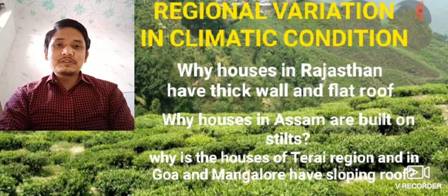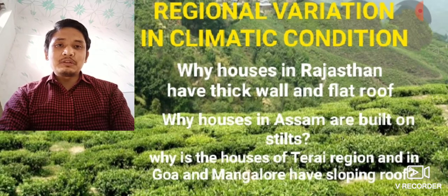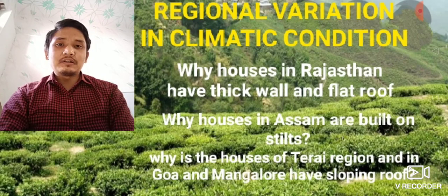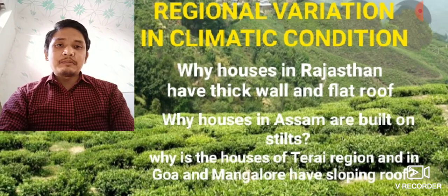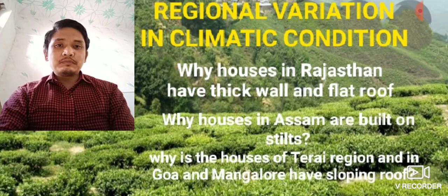This is also regional variation in climatic conditions. To summarize: in summer, Rajasthan's temperature may go above 50 degrees Celsius while Jammu and Kashmir may be only 20 degrees. In winter, Jammu and Kashmir may fall to minus 50 degrees while other parts of India remain between 10 to 20 degrees. Meghalaya receives more than 400 centimeters of rainfall annually while Rajasthan receives less than 50 centimeters.